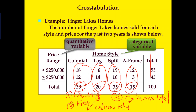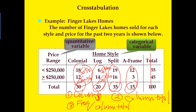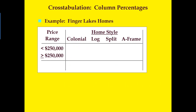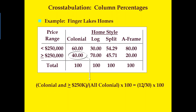For example, 18 divided by 30 times 100 for the first cell, and 12 divided by 30 times 100 for the cell below it. For the second column, use 6 divided by 20 times 100, and 14 divided by 20 times 100. Apply the same procedure for the third and fourth columns using totals of 35 and 15 respectively. This gives us the column percent cross tabulation.